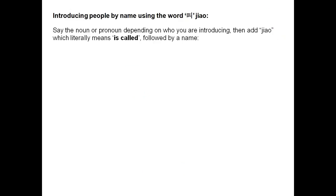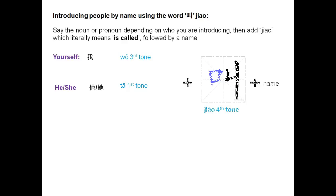Here is how to introduce someone using the word 叫. First, say the noun or the pronoun, depending on who you are introducing. Then add the word 叫, which literally means 'is called,' followed by a name. For example, yourself: 我 is called, or he or she: 他 is called. So: 我, or 他, plus the word 叫 (fourth tone), plus a name.